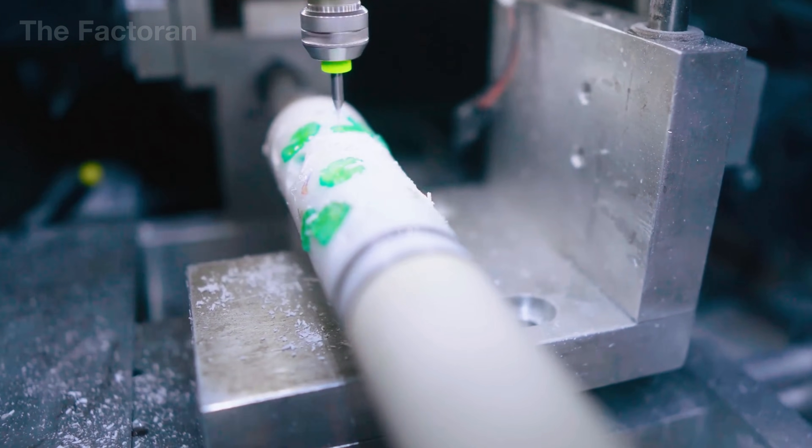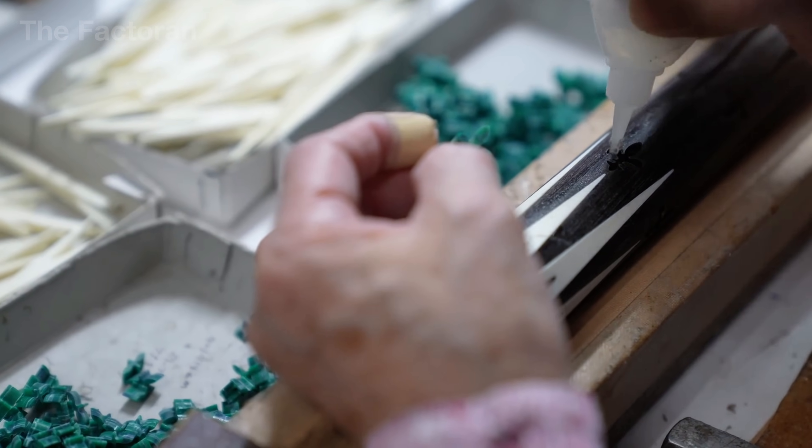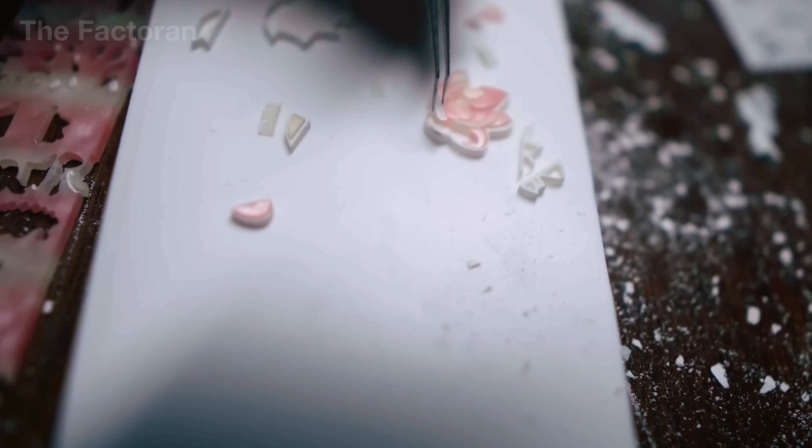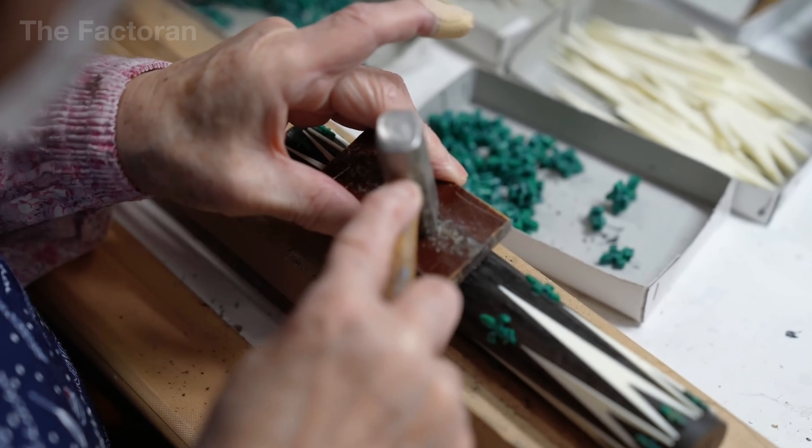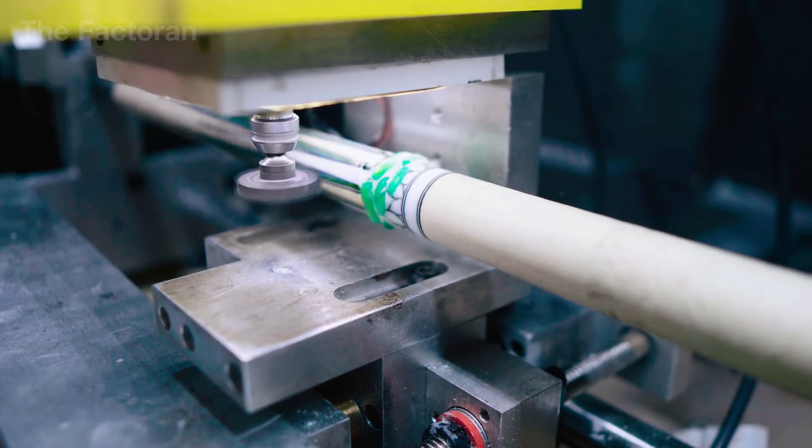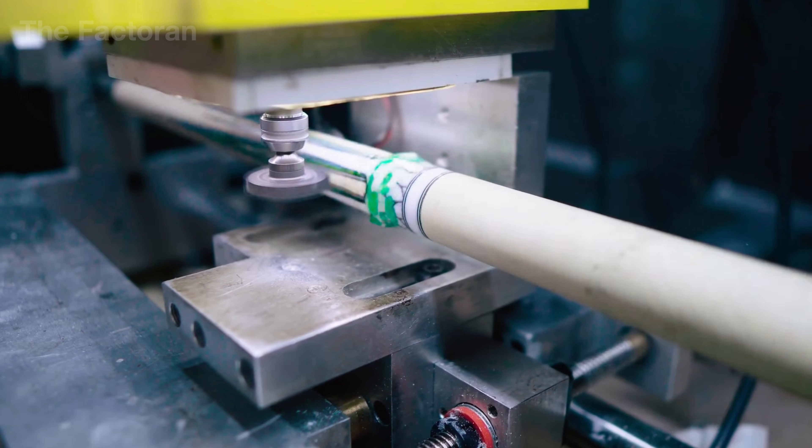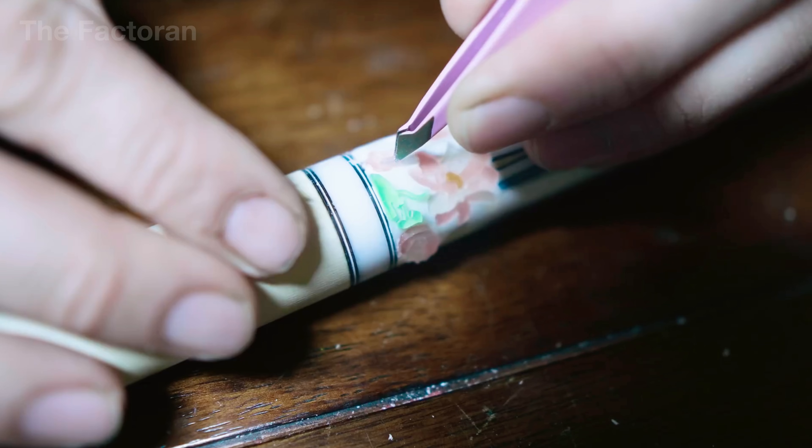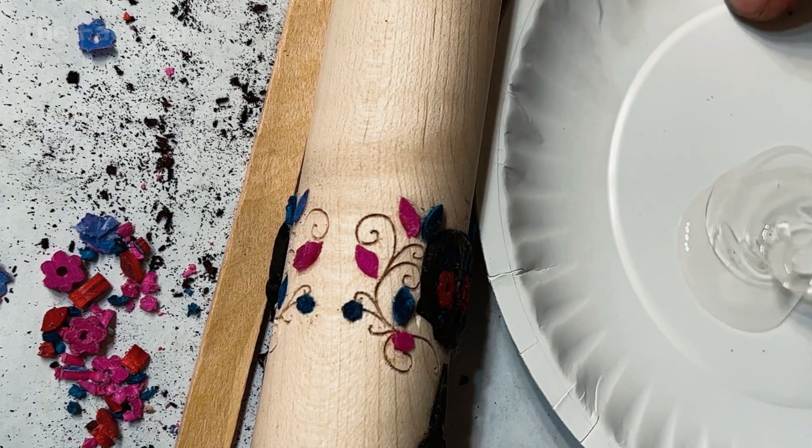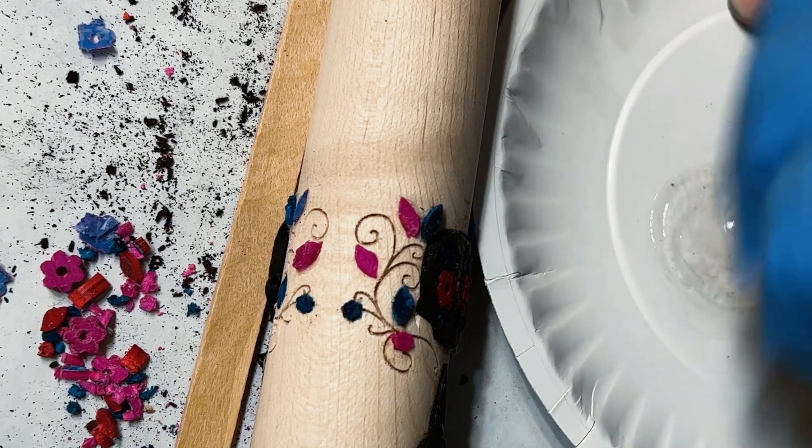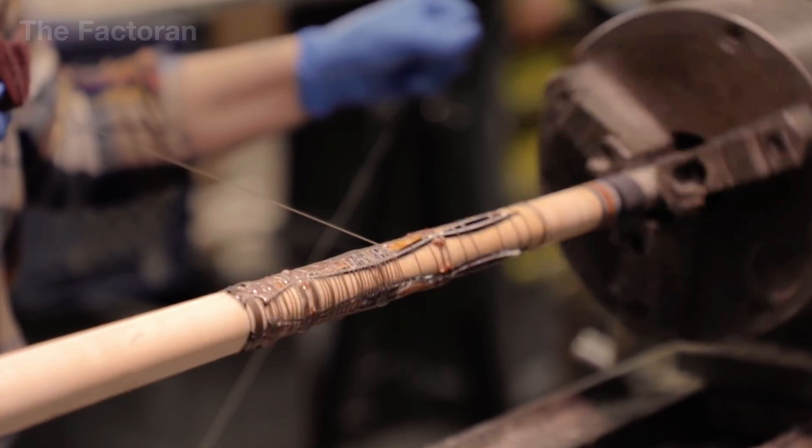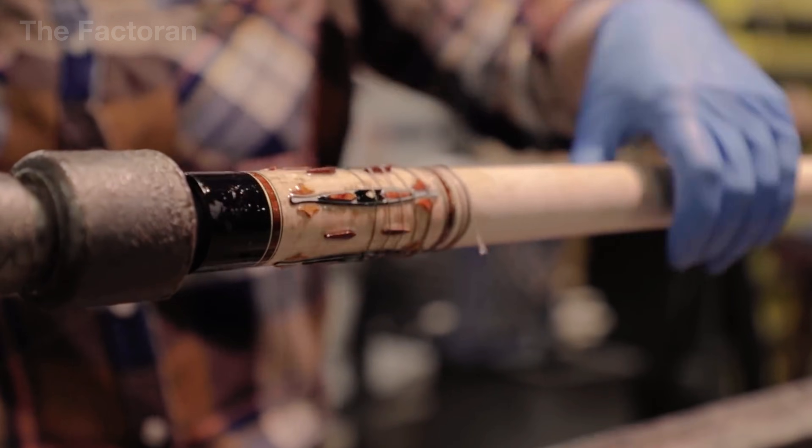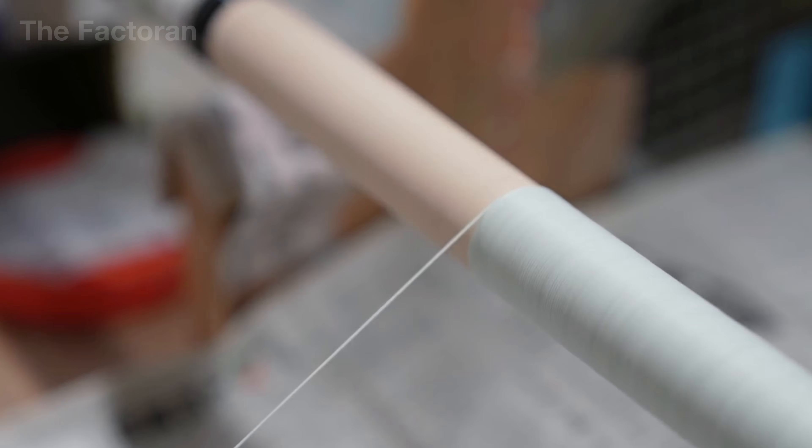Once the cutting is complete, the craftsman puts on gloves and carefully places each inlay piece into its designated slot, bonding them by hand using a specialized epoxy adhesive. To guarantee that every detail is positioned correctly, the craftsman can reference technical drawings and design images of the cue on a tablet at the workstation, checking alignment and orientation before fixing each piece permanently in place. After all the inlays have been installed, a cord is tightly wrapped around the entire cue butt to apply uniform pressure while the adhesive cures. This ensures that every inlay remains perfectly seated and flush with the surface during the bonding process.